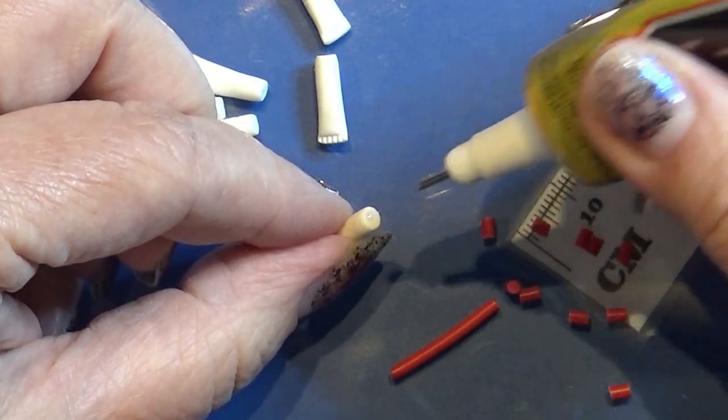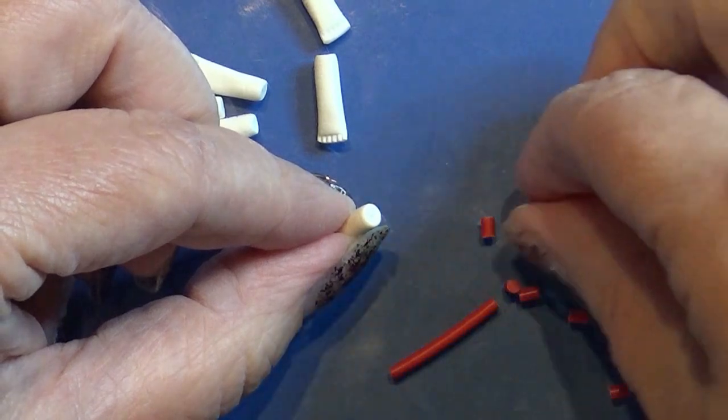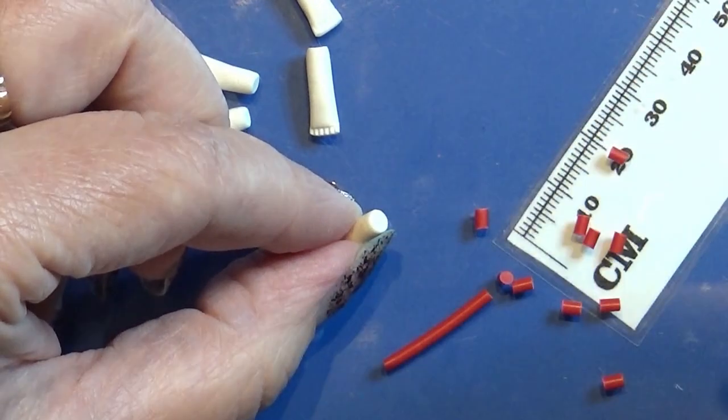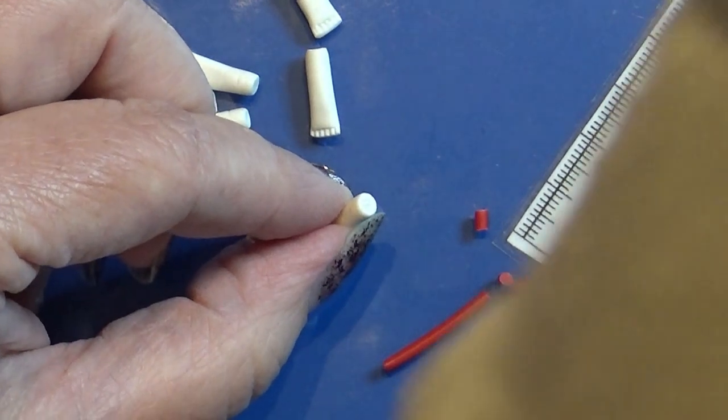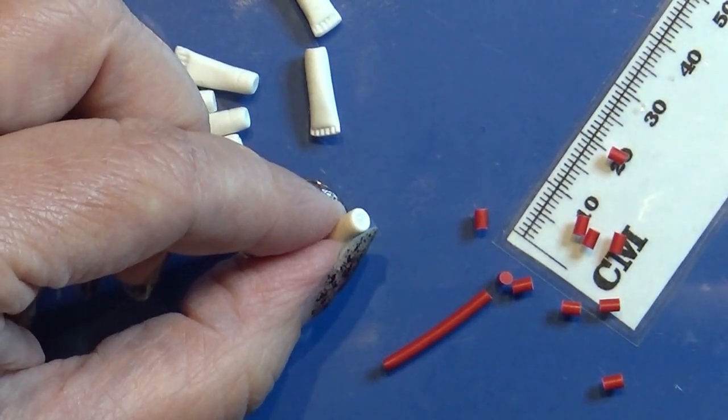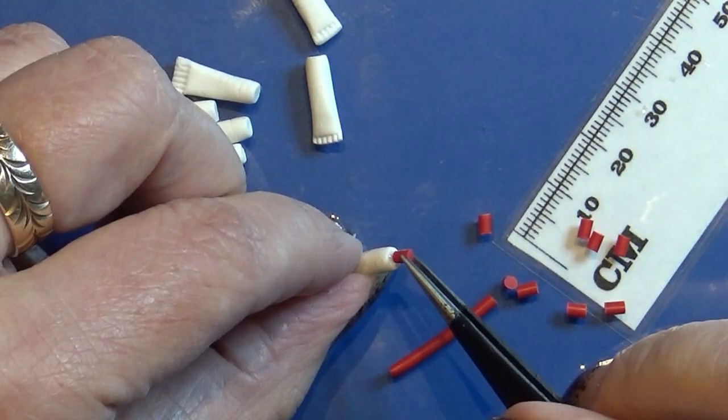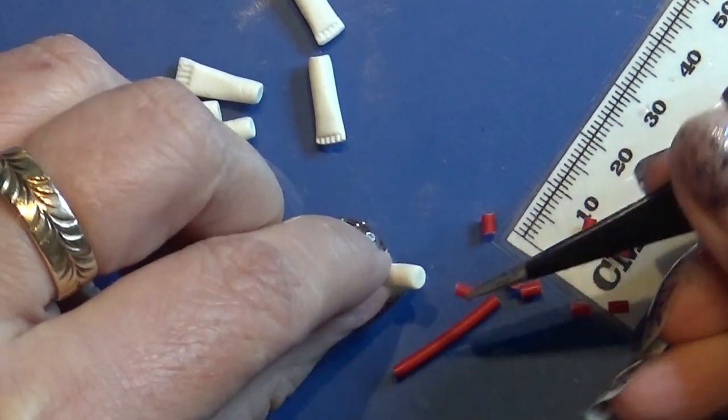I put a tiny bit of glue here on this white flat surface and I glue one of these red pieces on as the lid for this toothpaste. Do this with all of your toothpaste and let them dry before you continue.